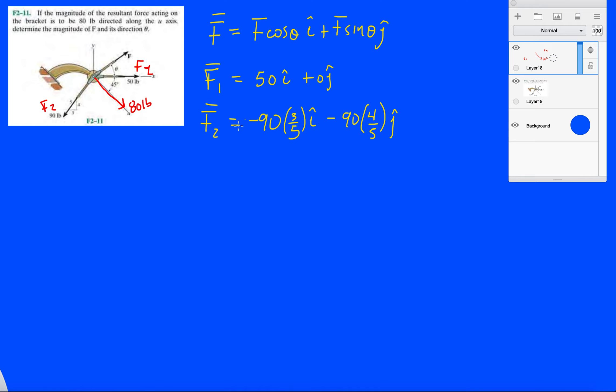Okay, so we've broken all these down, and now let's look at the resultant. So the resultant is pointing along that axis u.